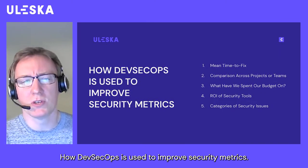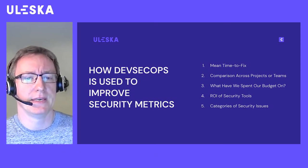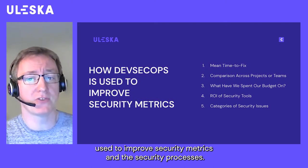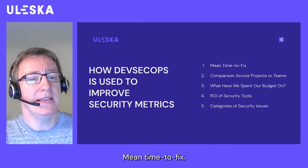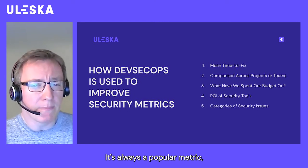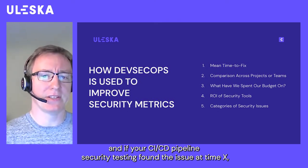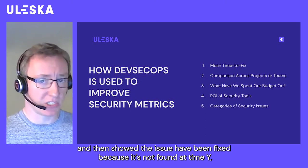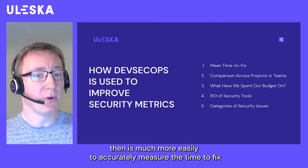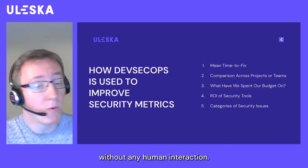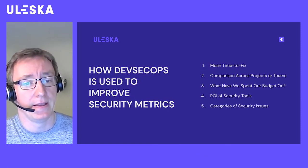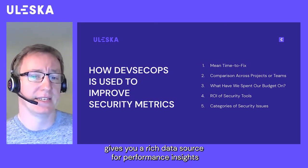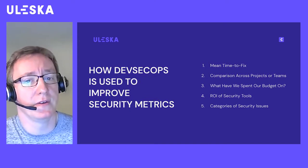Here are a few ways we've seen DevSecOps used to improve security metrics and security processes. Mean time to fix is always a popular metric. If your CI/CD pipeline security testing found an issue at time X and then showed the issue had been fixed because it's not found at time Y, then it's much easier to accurately measure the time to fix without any human interaction. Doing this at scale across thousands of issues gives you a rich data source for performance insights that you can match up to new actions you're introducing for quick feedback.